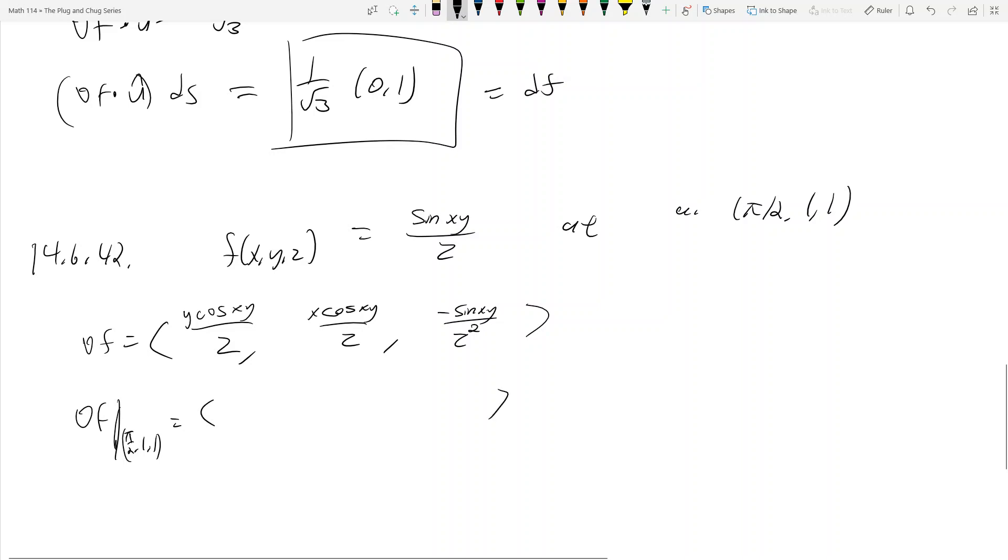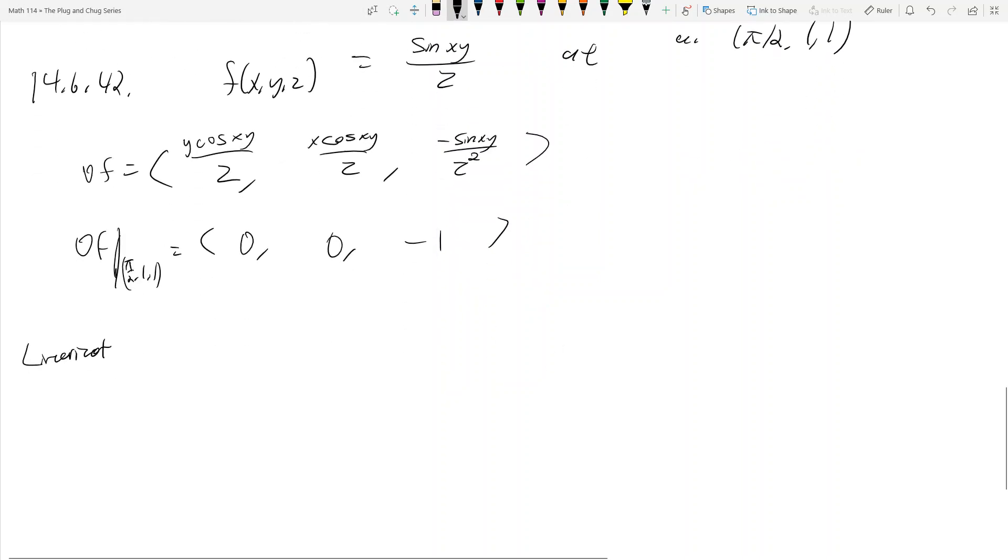What is that? That's equal to 1 times cosine of pi over 2, so that's 0. Here you get 1 times cosine pi over 2, that's also 0. And you get negative sine of pi over 2 over z squared, which is 1 squared, and so you get minus 1. So 0, 0, minus 1 is the name of the game, and so we're trying to find a linearization. How do we find a linearization? The linearization, which is L of x, y, z, is equal to, let me pull up the equation from the textbook, it's going to be f of x naught, y naught, z naught, so f evaluated at the point.